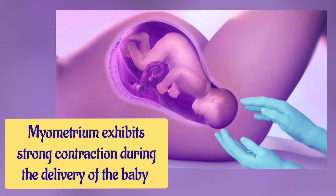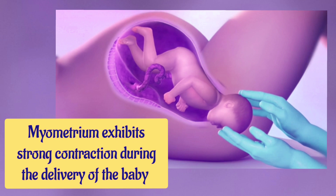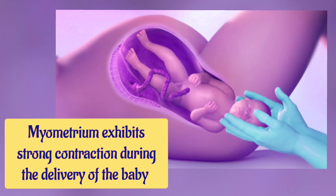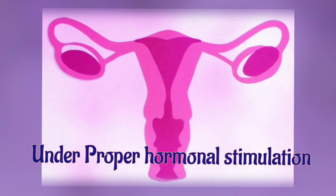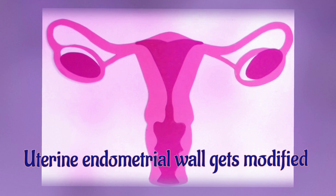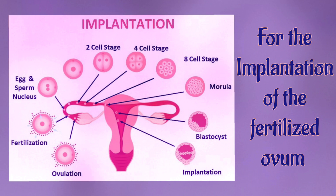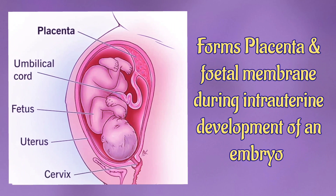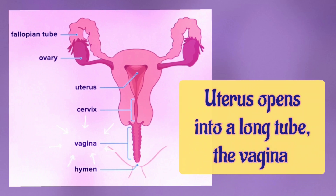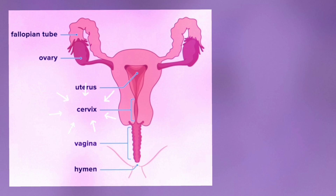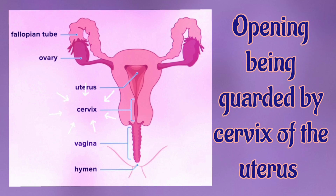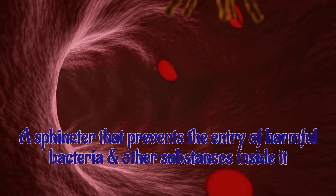The endometrium undergoes cyclical changes during the menstrual cycle, while the myometrium exhibits strong contractions during delivery of the baby. Under proper hormonal stimulation, the uterine endometrial wall gets modified for the implantation of the fertilized ovum and also forms the placenta and fetal membrane during intrauterine development of an embryo.